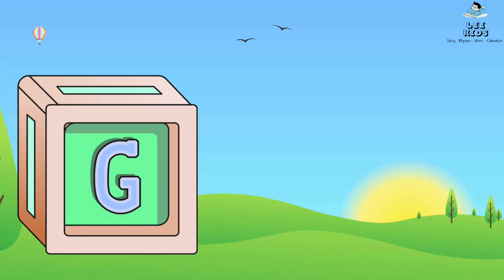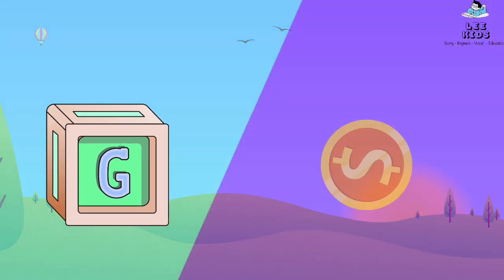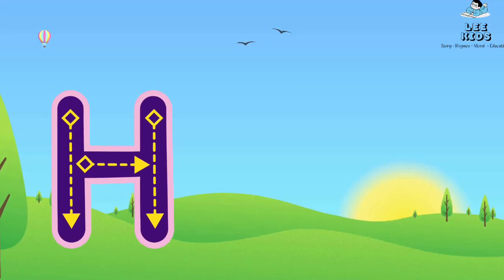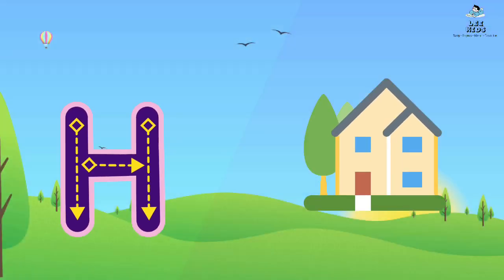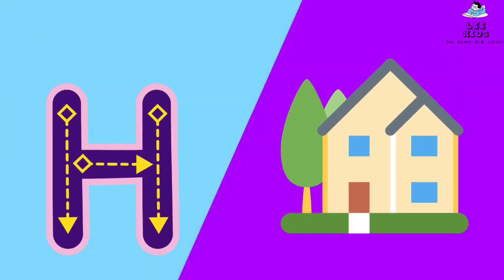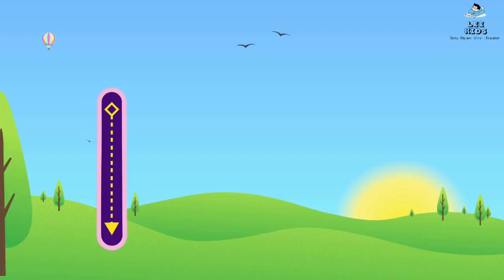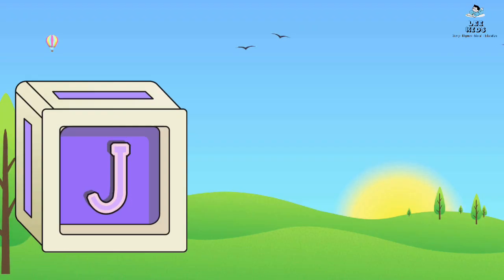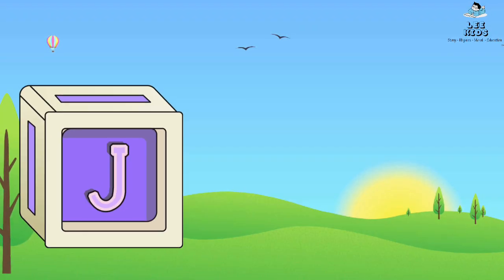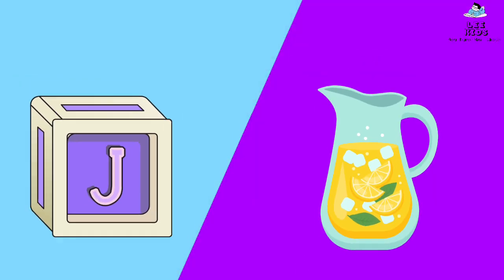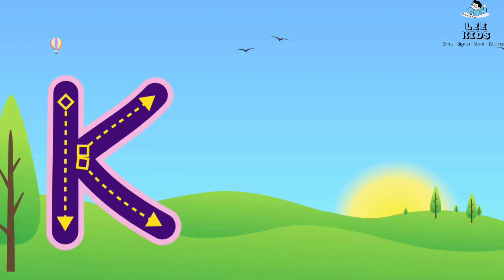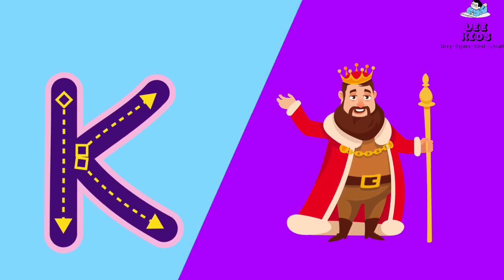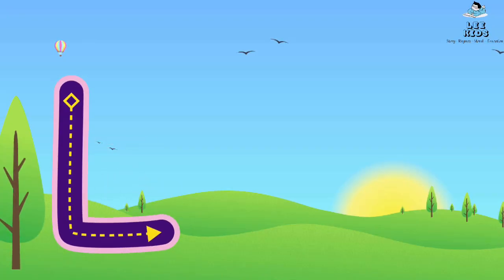G for gold, H for house, I for ice cream, J for duck, K for king, L for lion.